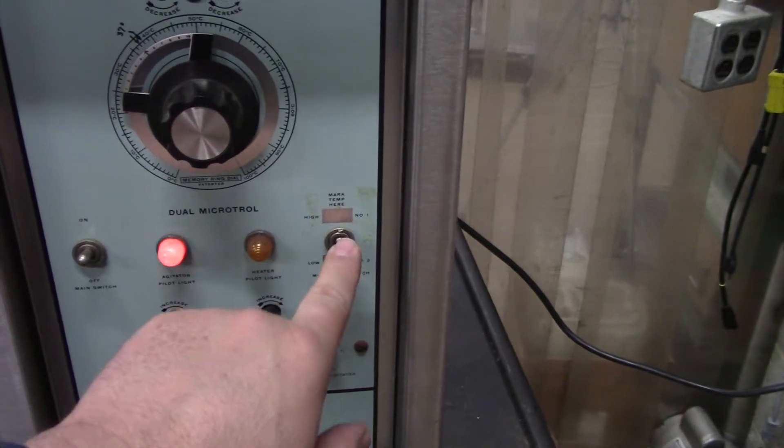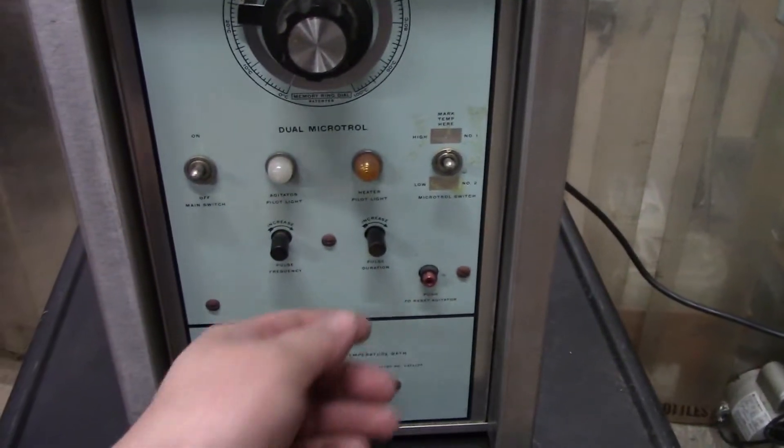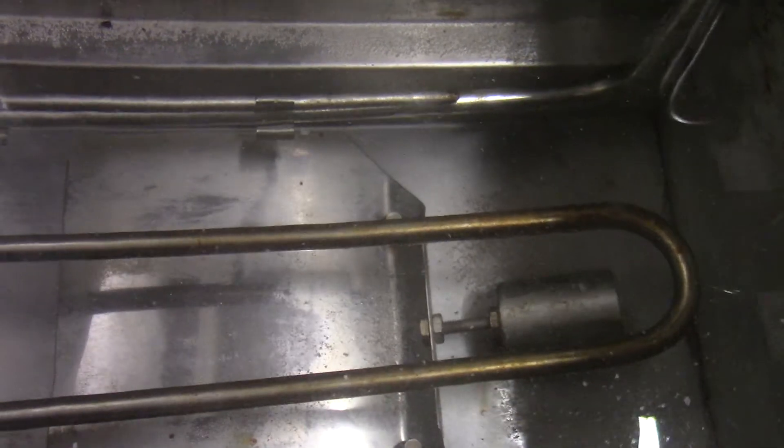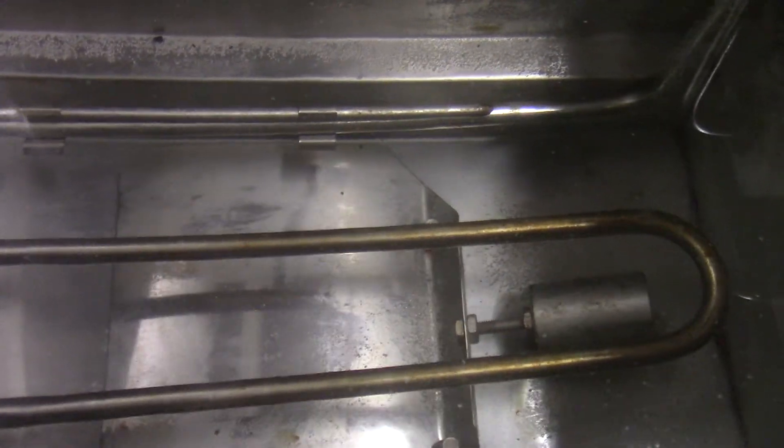This will watch out for your high or low temp and shut the unit off. This has a Magna Whirl pulsing thumper inside. That's how it's moving the water around.